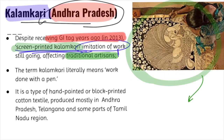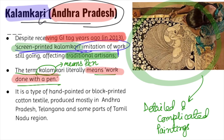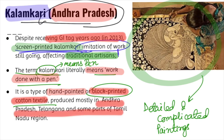Kalamkari is a very detailed and complicated painting. 'Kalam' literally means pen, so Kalamkari means work done with the pen. It is a type of hand-painted as well as block-printed cotton textile, mainly produced in Andhra Pradesh and nearby regions.